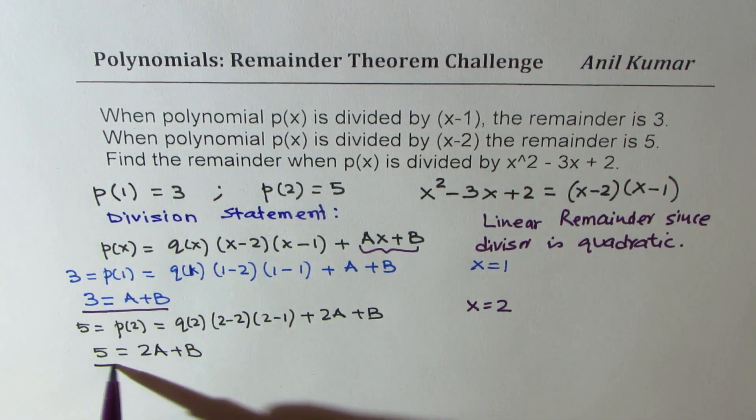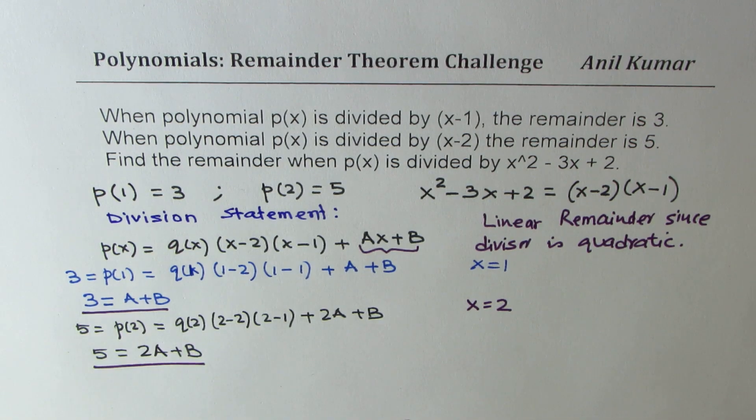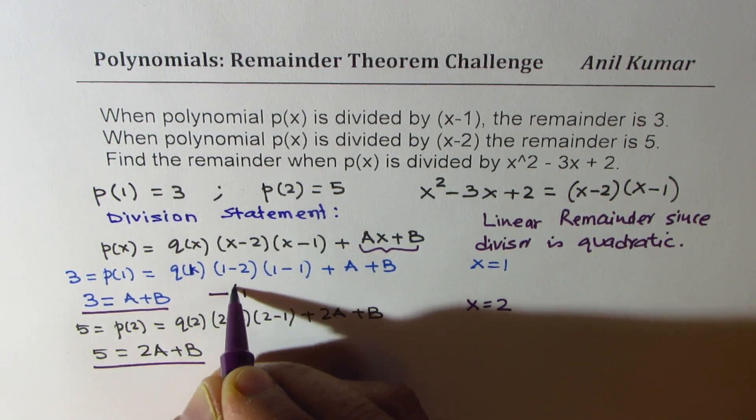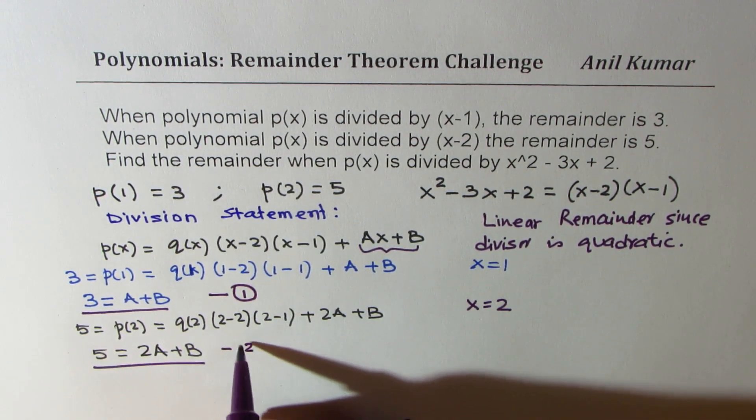So we have two equations and two unknowns. So now it is simpler to find the value, right? So let's number these equations as equation 1 and equation 2.